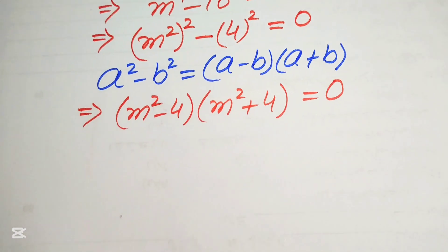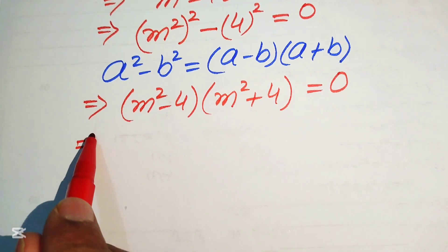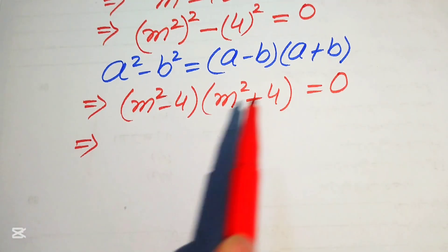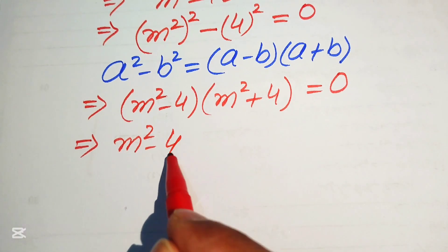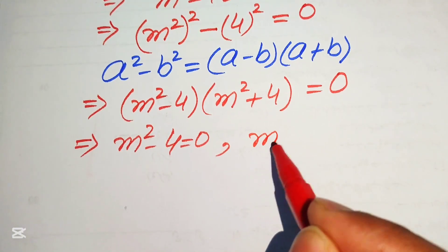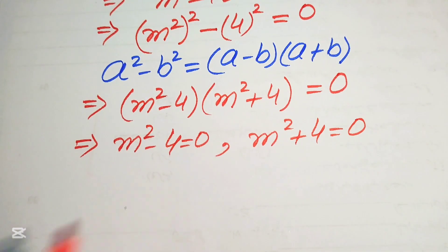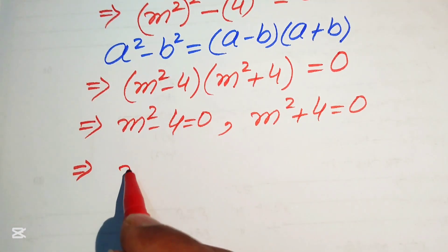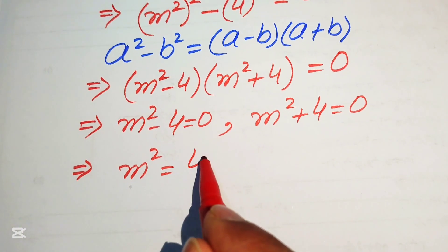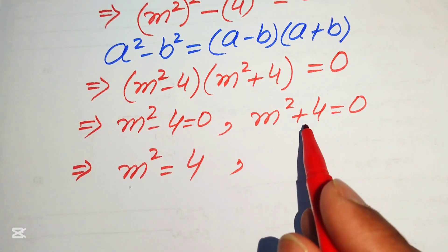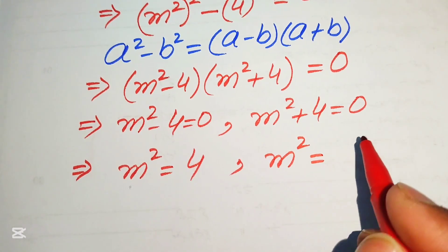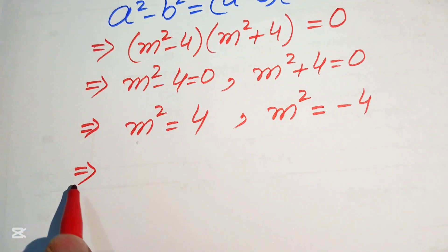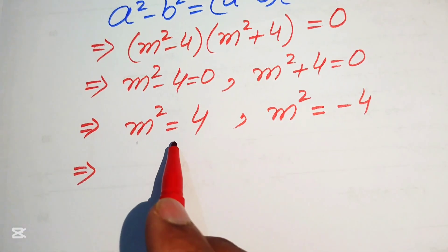We separately set each factor equal to zero: m² - 4 = 0 and m² + 4 = 0. From the first case, moving -4 to the right gives m² = 4. From the second case, moving +4 to the right gives m² = -4.